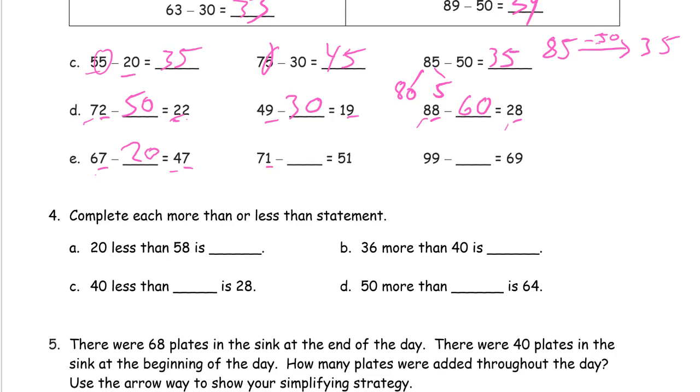Looking at this one, we're not subtracting any ones again, so 0 ones in our subtrahend, and we have to get from 7 tens down to 5 tens, that's 2 tens we have to take away. And 99 here again, we're not taking away any ones, because we still have 9 ones left after we subtract, so our subtrahend is going to have 0 for our ones digit. And we have to get from 9 tens down to 6 tens, we have to take away 3 tens to do that.